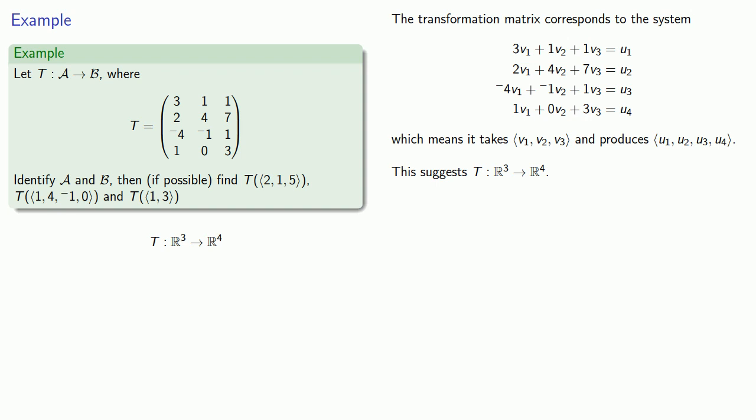So for the vector (2,1,5), we have v1 equals 2, v2 equals 1, v3 equals 5.